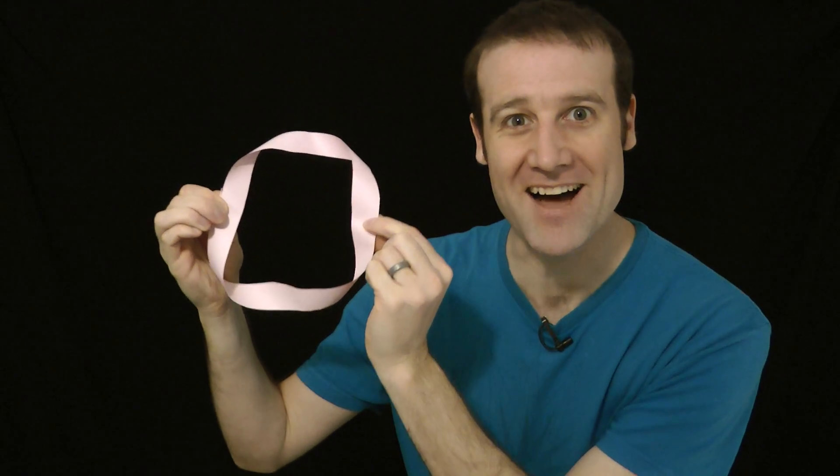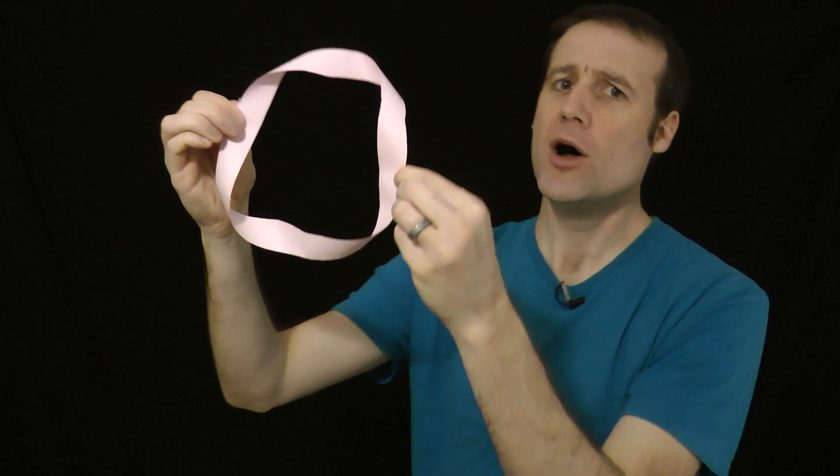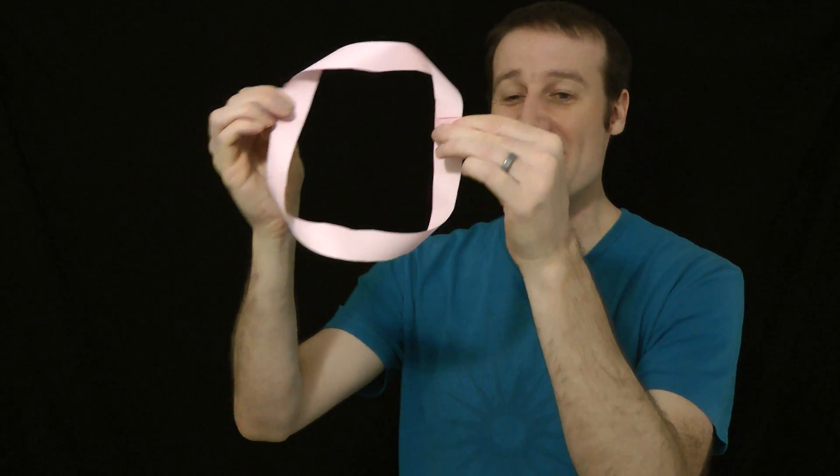You can't cut a Mobius Loop in half. If you cut right down the center you end up with this, it's another complete loop of paper, only now instead of having one twist, after we've cut down the center, this piece of paper has four twists.